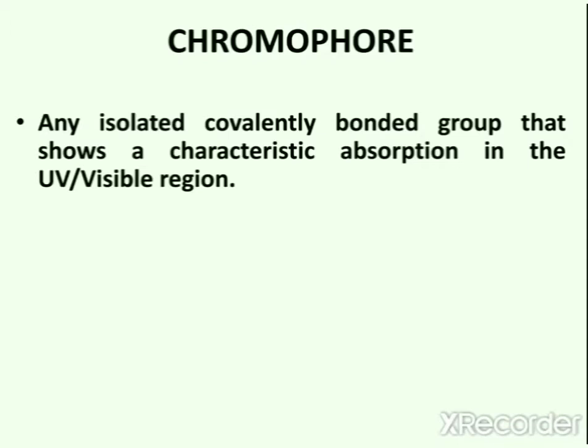Now this definition suggests that these groups can absorb in either ultraviolet or visible region. If the group absorbs in the ultraviolet region, it will not impart any color to the compound. But if it shows characteristic absorption in the visible region, it will impart color to the compound.